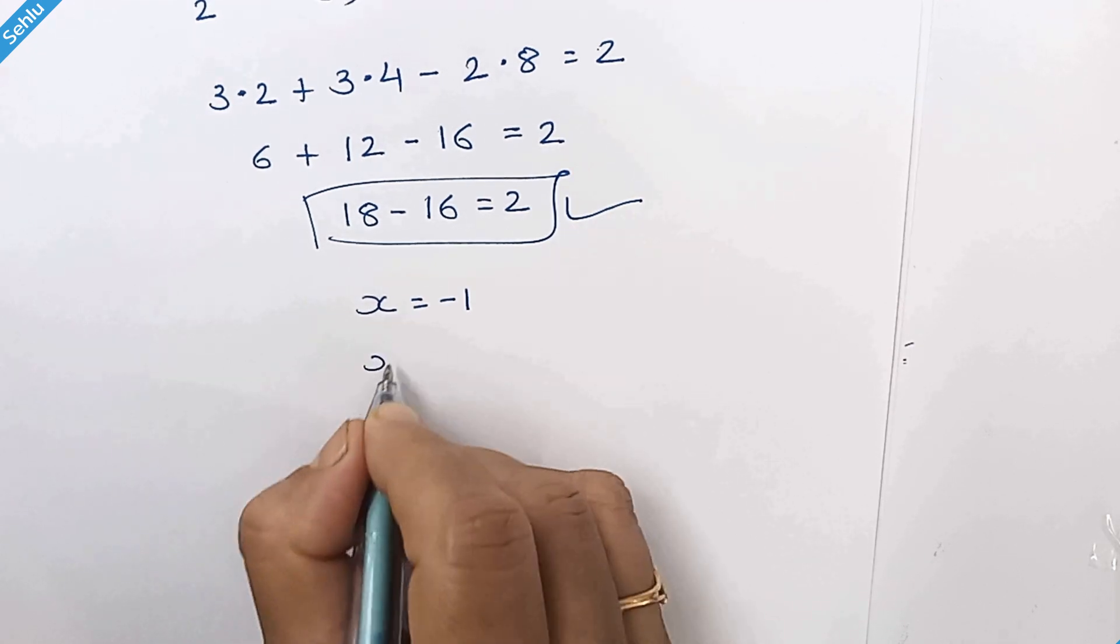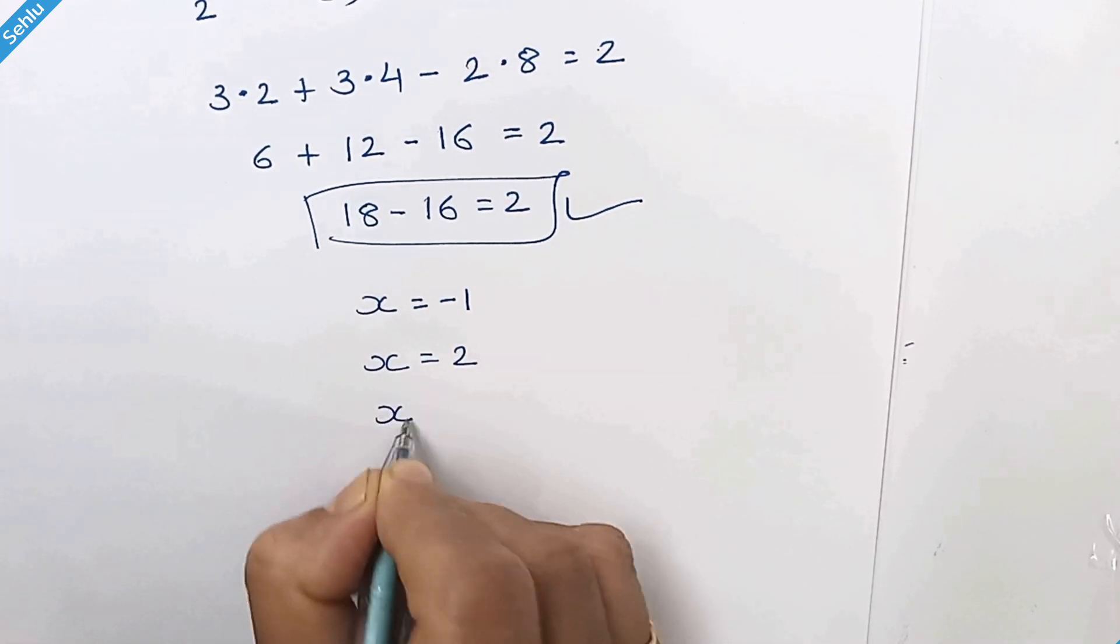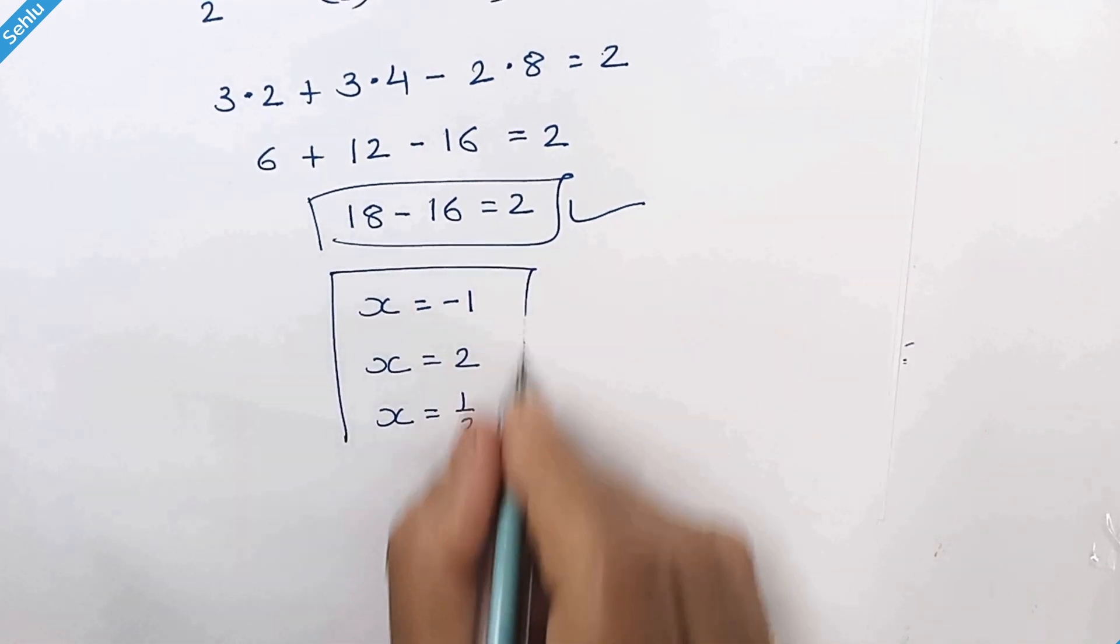So x is equal to negative 1, x is equal to 2 and x is equal to 1 over 2 are the correct answers.